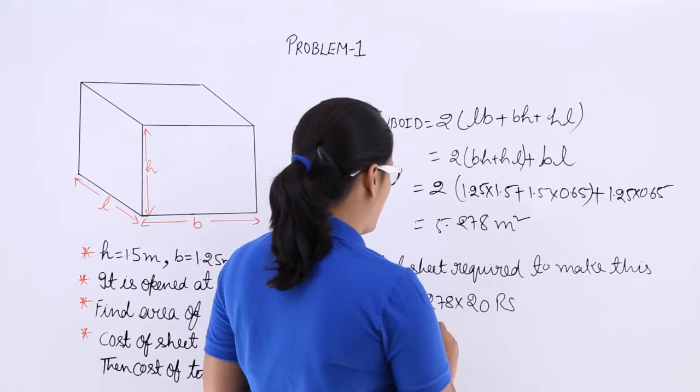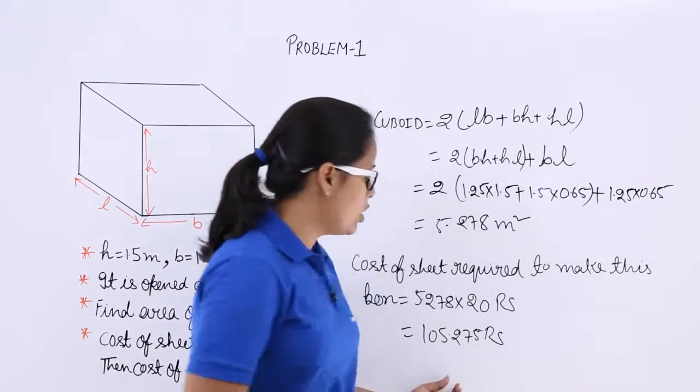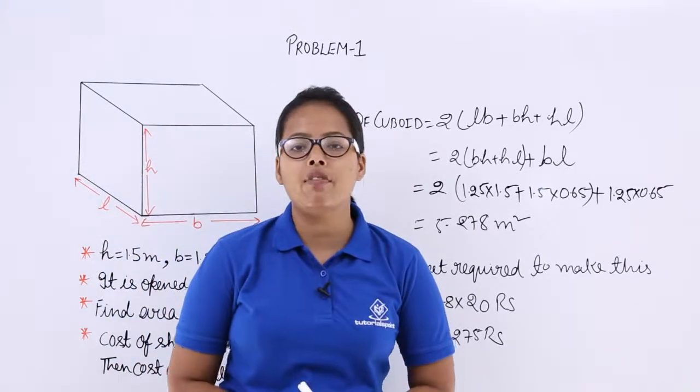When you multiply this, what you will get? You will get 105.56 rupees which is 105 rupees and 56 paise.